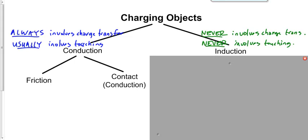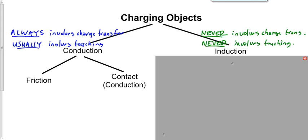Let's look at charging by conduction in more detail. We break it down into two smaller categories: charging by friction and charging by contact. Charging by friction involves rubbing things together. When you rub two dissimilar materials together — two materials that aren't the same — one will tend to lose electrons more easily than the other. The kinetic energy from that rubbing causes electrons to leave that material and go to the other.